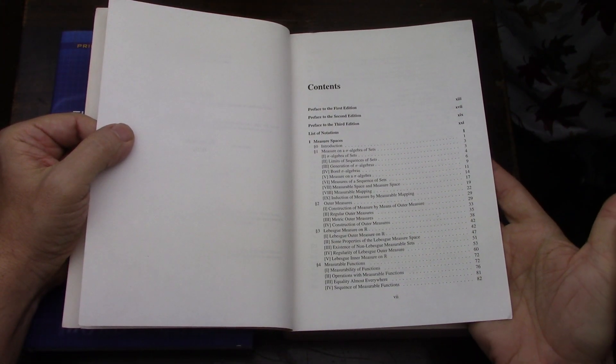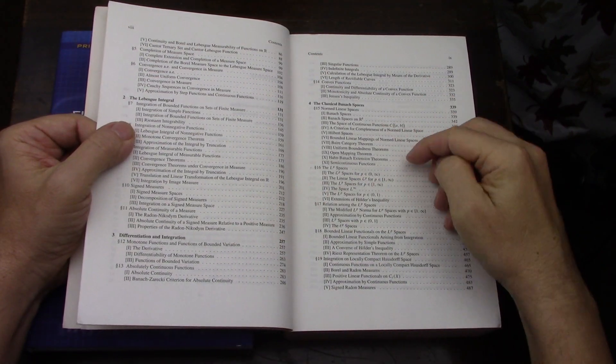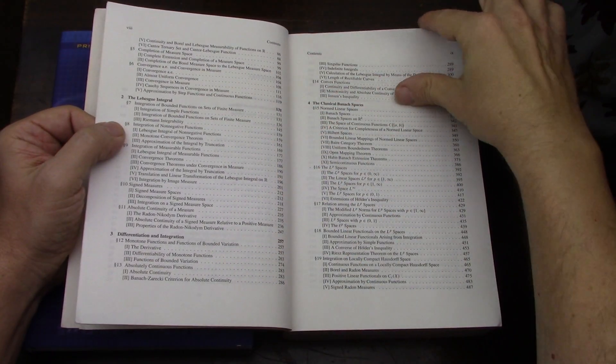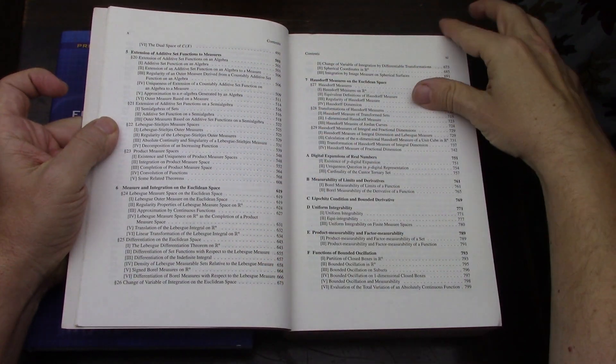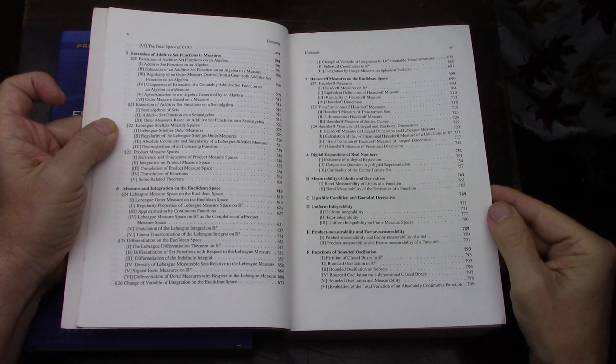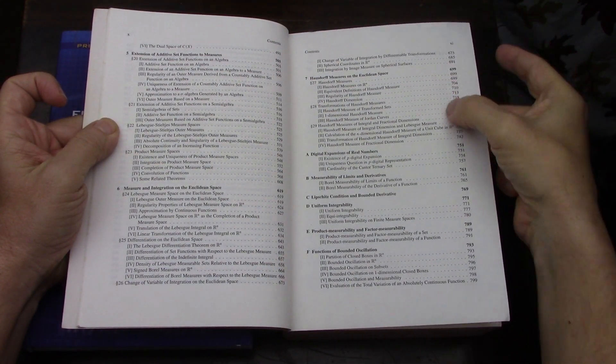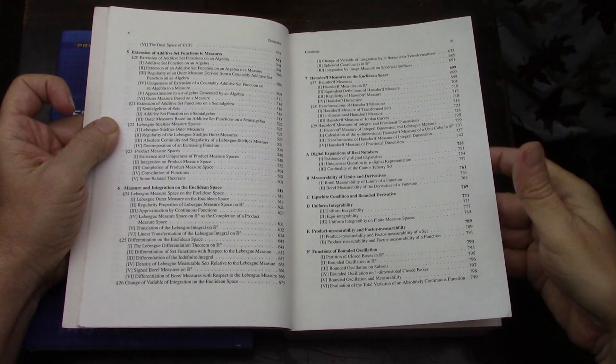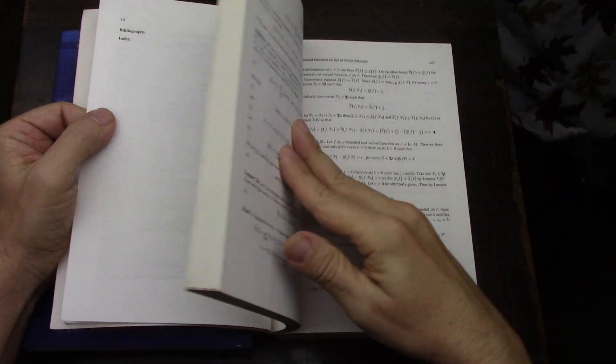But in Ye's book, he's got a lot of LP space stuff. Lebesgue Integral. How stuff measures. So I would have actually used this book also for volume three. And yeah, so there you have it.